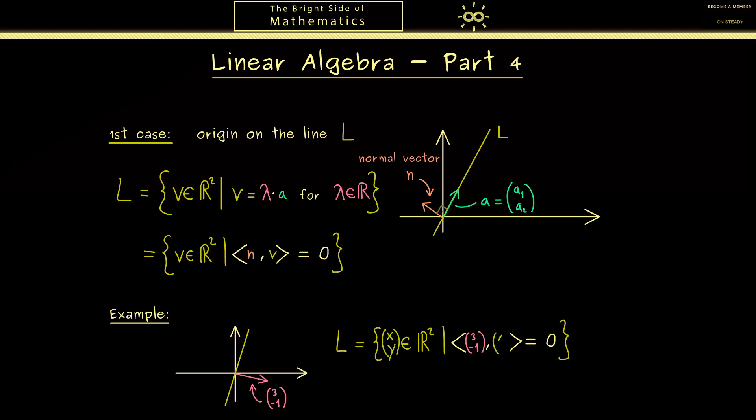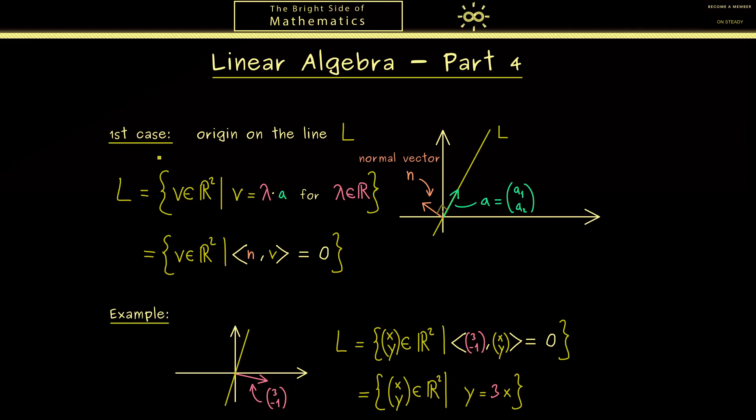And then we can just simplify the inner product on the right hand side. So don't forget this is the standard inner product. So we multiply 3 with x and minus 1 with y and then add them. Hence we can write the equation as y is equal to 3x. And there you see this is how you would describe this line as the graph of a function. So I would say everything fits nicely and therefore we are ready for the second case.